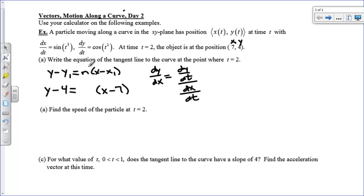We're going to get cosine of 4. That's going to be our dy dt divided by the sine of 8. And if you want a decimal for this, you can use your calculator to get that value. But there's our tangent line equation.